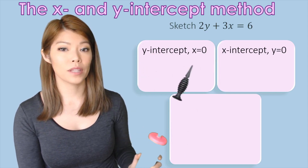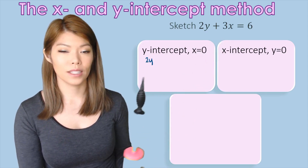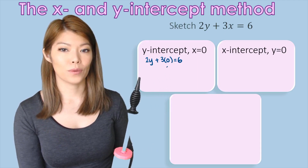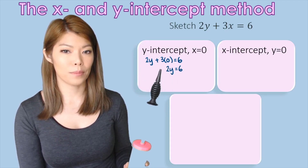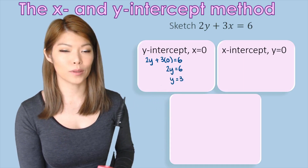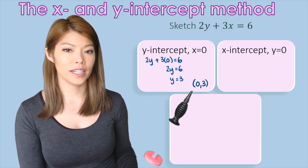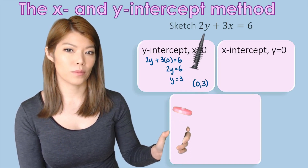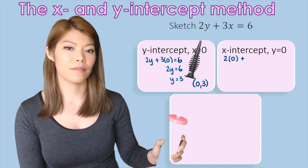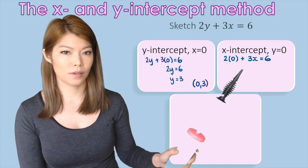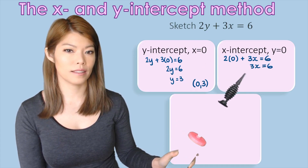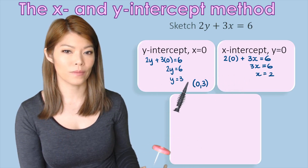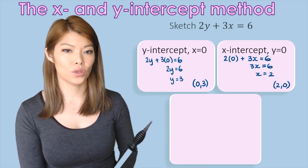For the y-intercept, substitute x equals 0: we get 2y plus 0 equals 6, so 2y equals 6, divide both sides by 2, giving y equals 3. Our first coordinate is (0, 3). For the x-intercept where y is 0, substitute 0 in: we get 3x equals 6, divide both sides by 3 to get x equals 2. So our coordinate is (2, 0).